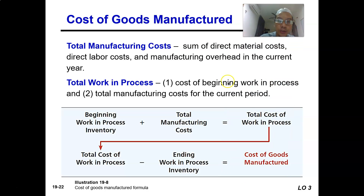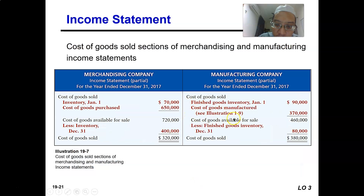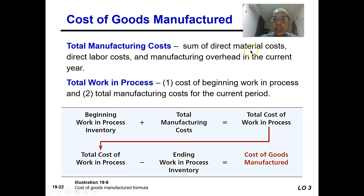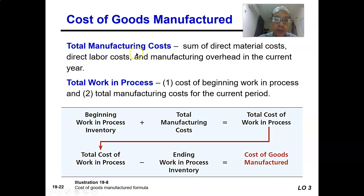How do we calculate cost of goods manufactured? They will have the total manufacturing cost for that particular period. For that year, they will incur direct material cost, direct labor cost, and manufacturing overhead. Adding all three together for the current period gives the total manufacturing cost for the year.